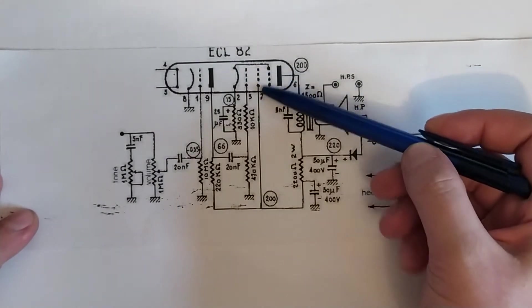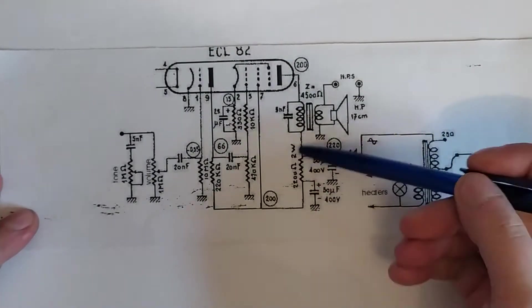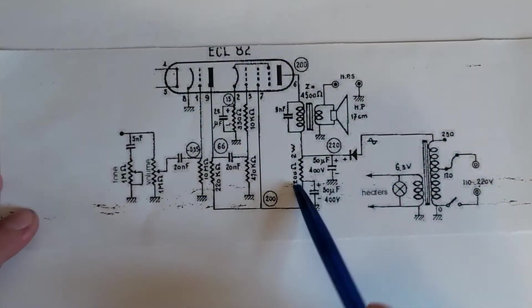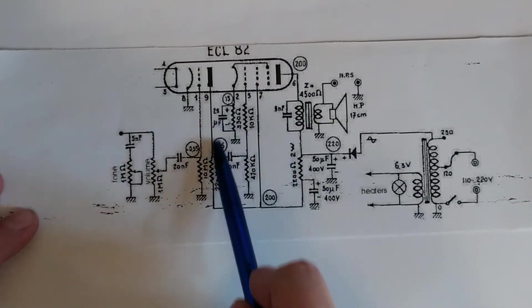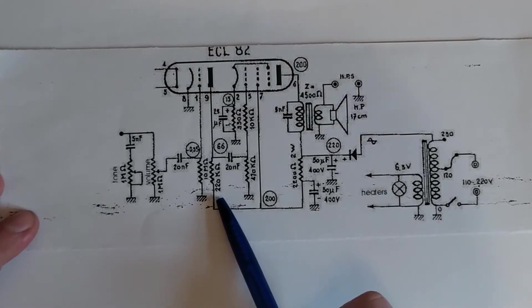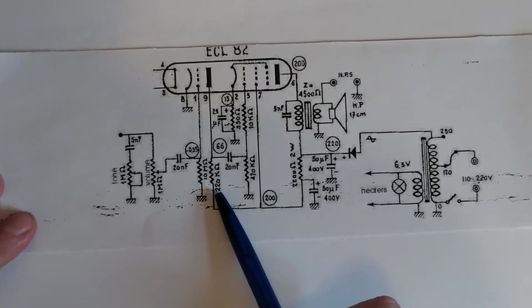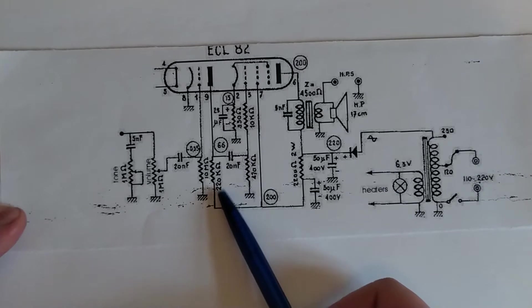Having an additional filtering stage for the acceleration grid, grid 2 of the pentode section, is also a good idea. 50 microfarad sounds fine. They're also using that as the anode voltage for the triode, and we'll have to see how that sounds. If that gives us a lot of distortion, we'll have to put an additional filtering stage in, but I don't really expect it.